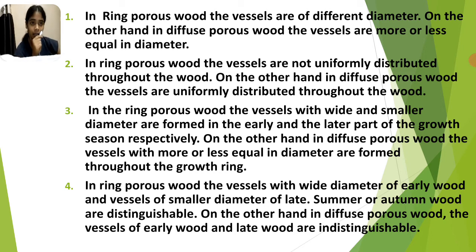Number three: in ring porous wood, the vessels with wide and smaller diameter are formed in the earlier and the later part of the growth season respectively. But in diffuse porous wood, the vessels with more or less equal diameter are formed throughout the growth ring.